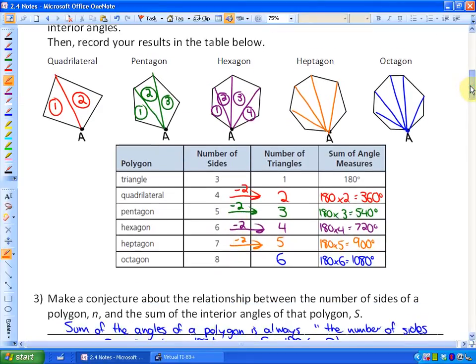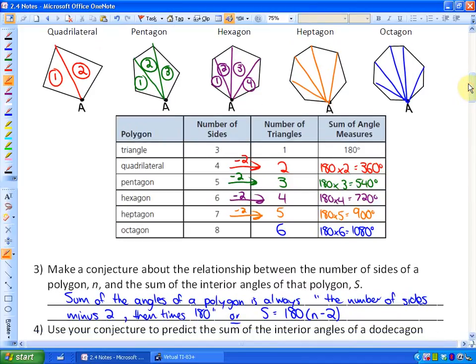So it says make a conjecture about the relationship between the number of sides of a polygon and the sum of the interior angles. So in English, it would say this. The sum of the angles of a polygon is always the number of sides minus two, because that will give you the number of triangles, and then times by 180. Or the equation that you'll be given, or the formula that you'll be given in this chapter, is that the sum of the angles is always 180 degrees times the number of sides minus two. So take the number of sides, subtract two, and then multiply by 180.